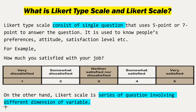So when there are a series of questions to know your preferences, satisfaction level, or agreement level, that is a Likert scale. To summarize: a Likert type scale uses only one question for data collection, but in a Likert scale there are multiple questions which the researcher collects data from.